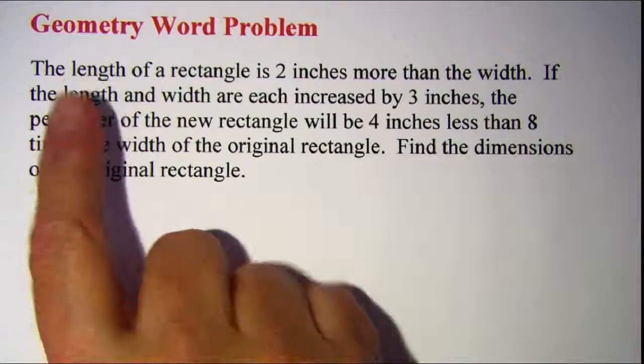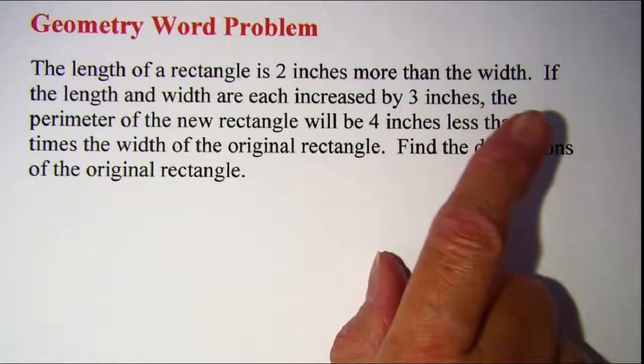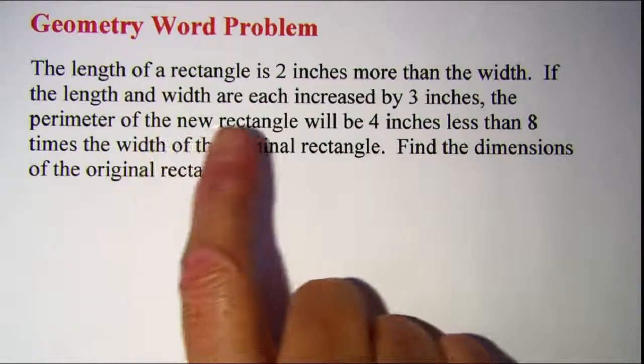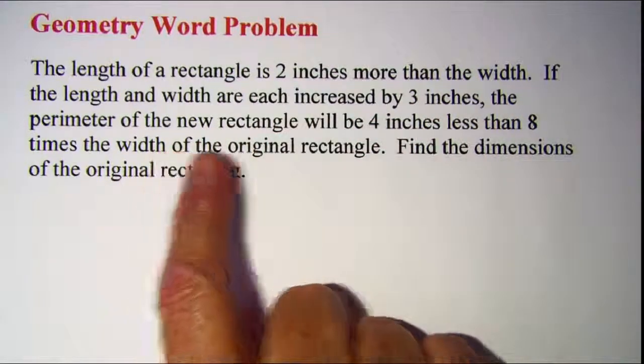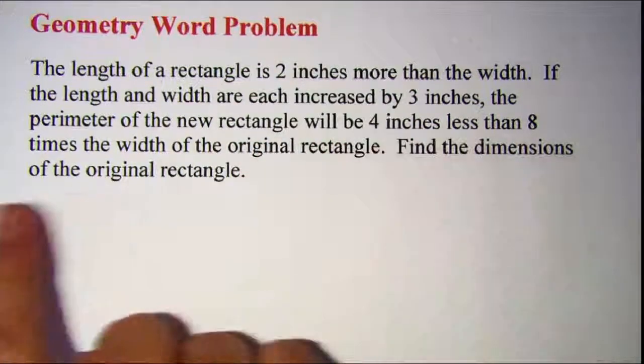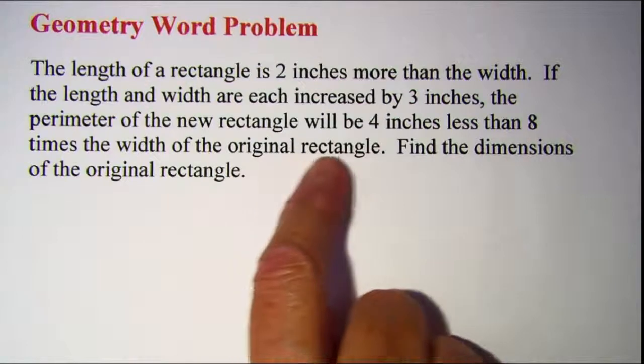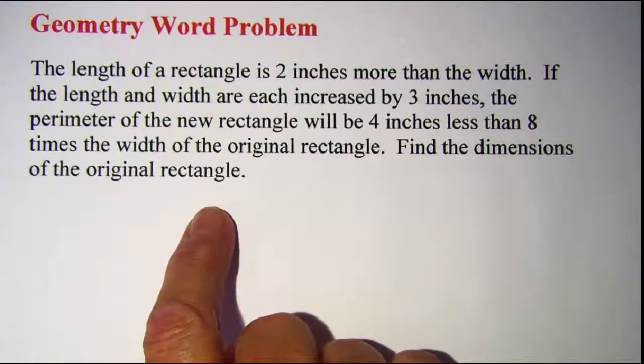The problem that we'll be working with is: the length of a rectangle is two inches more than the width. If the length and the width are each increased by three inches, the perimeter of the new rectangle will be four inches less than eight times the width of the original rectangle. Find the dimensions of the original rectangle.